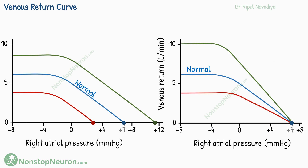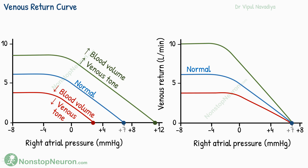To summarize the changes in the venous return curve: changing blood volume or venous tone shifts the venous return curve up or down, while changing arteriolar tone affects its slope. Please note that we discussed different situations separately to keep things simple, but in most cases multiple things are happening at the same time. That was all about the venous return curve.